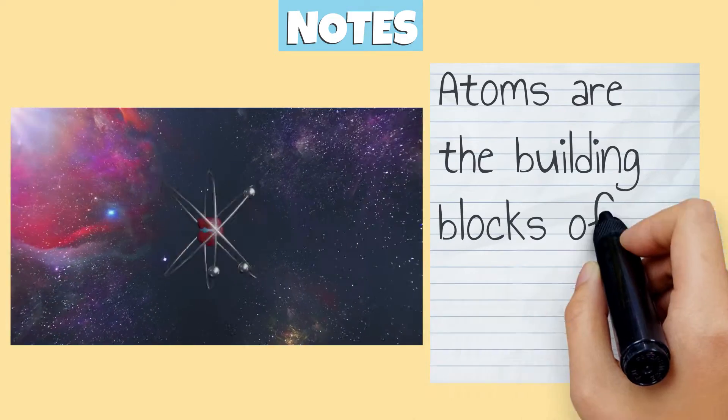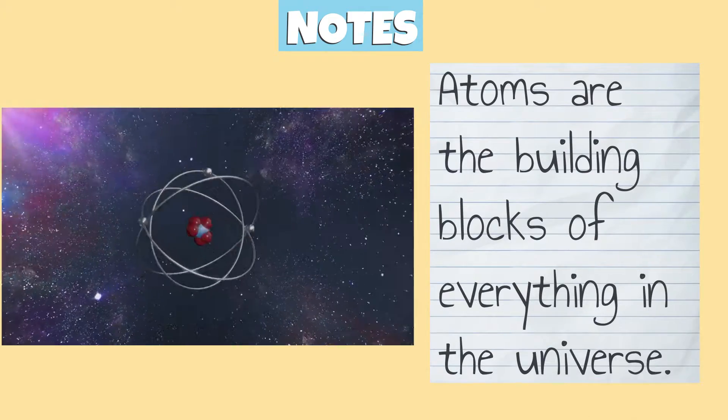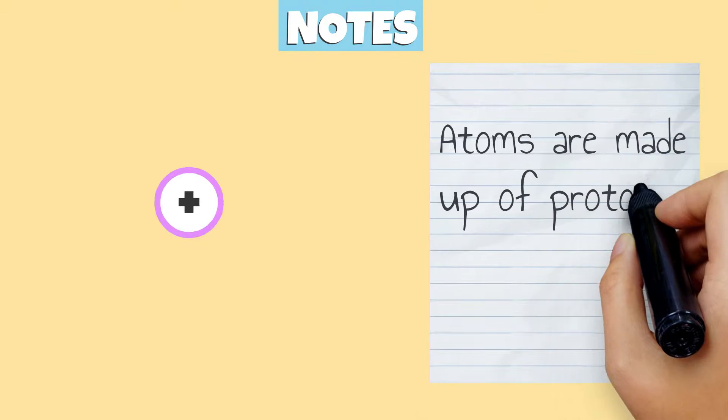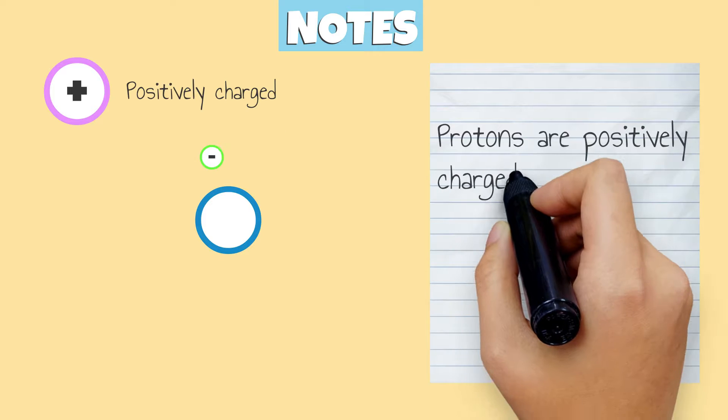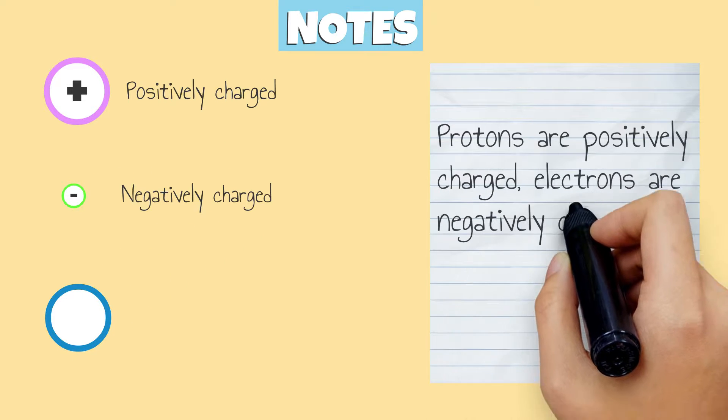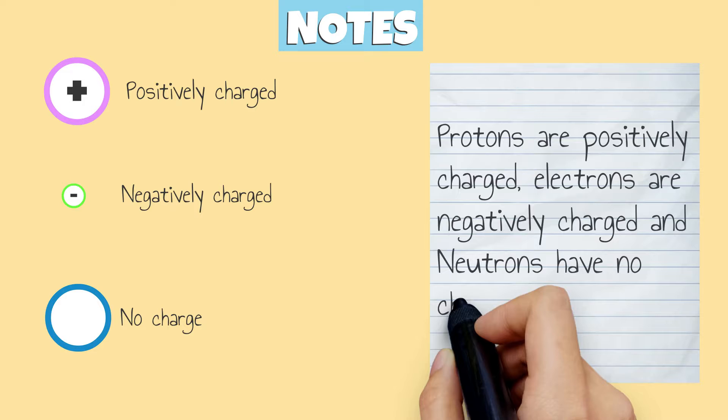Let's review what we just learned. Atoms are the building blocks of everything in the universe. Atoms are made up of protons, neutrons, and electrons. Protons are positively charged, electrons are negatively charged, and neutrons have no charge.